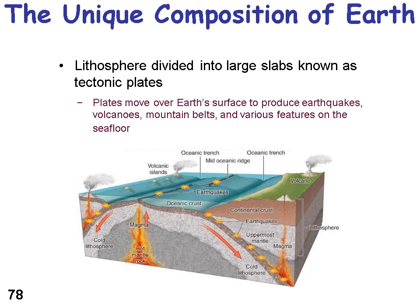The lithosphere is divided into large slabs known as tectonic plates. These plates move over the Earth's surface and produce earthquakes, volcanoes, mountain belts, and various features on the seafloor. Plate tectonics is a major system driver on the Earth — the main driver of what creates the features we see on the surface and what makes the rocks the way they are.